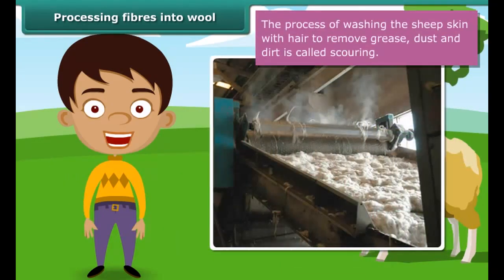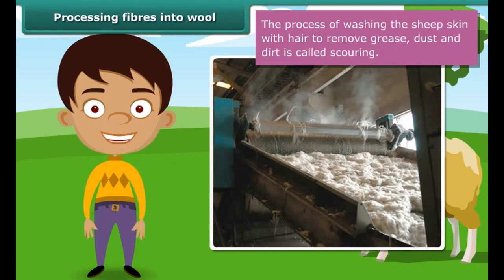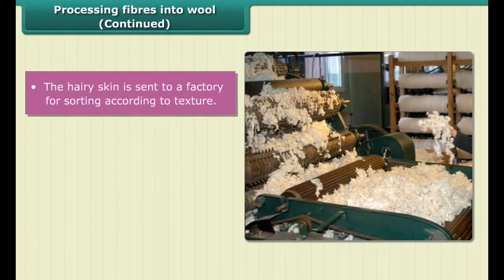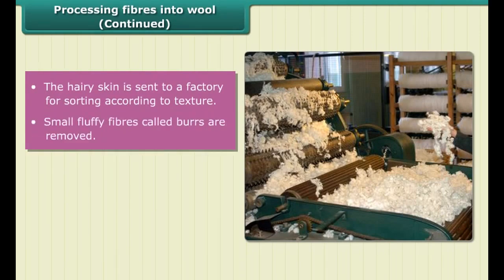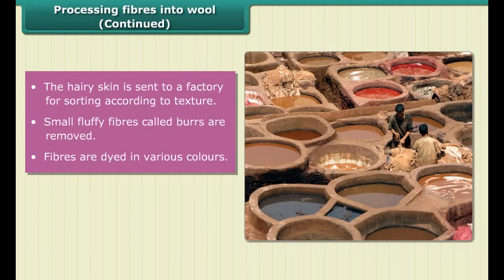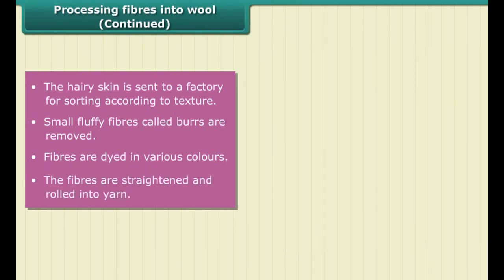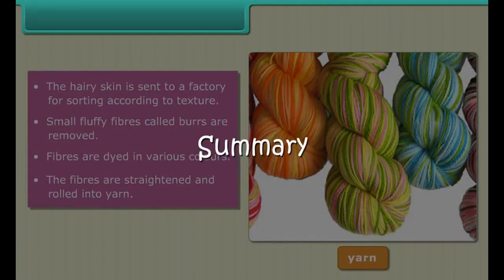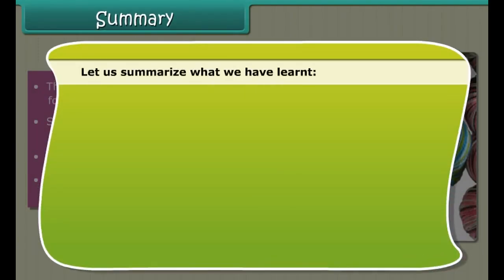Let us study the process by which wool is obtained from sheep one step at a time. First, the fleece is removed from the body of the sheep using a machine. The process of removing the fleece of the sheep from its body with the help of a machine is called shearing. Shearing does not hurt the sheep because the uppermost layer of the sheep's skin is dead. Usually, hair is removed during the hot weather, which enables sheep to survive without their protective coat of hair. Then the sheared skin with hair is washed thoroughly in tanks to remove grease, dust and dirt. This process is called scouring.